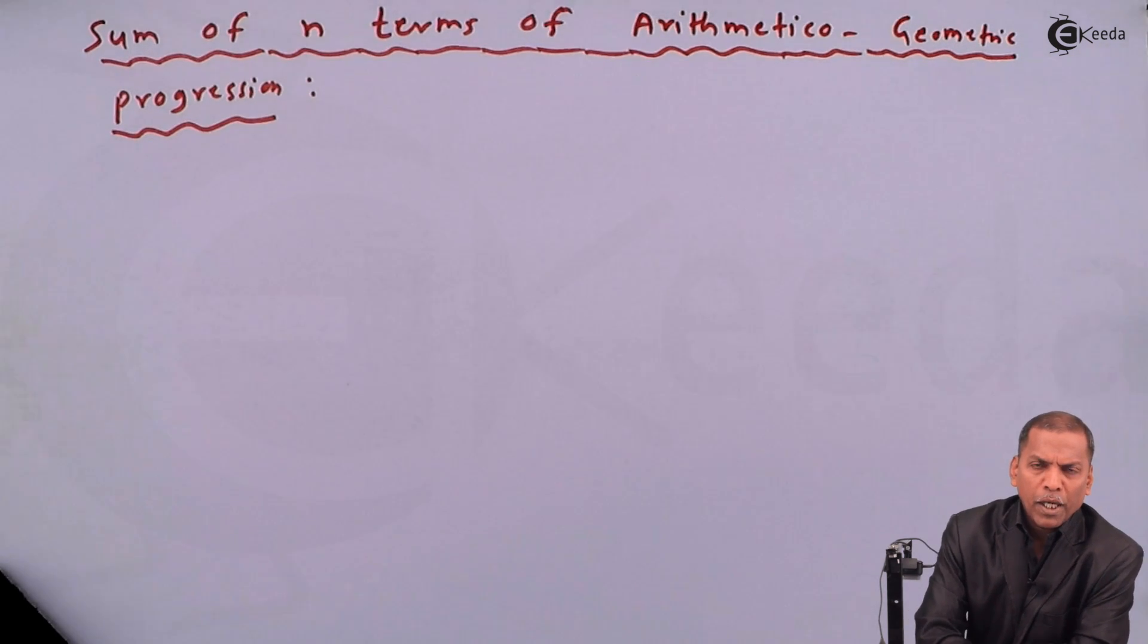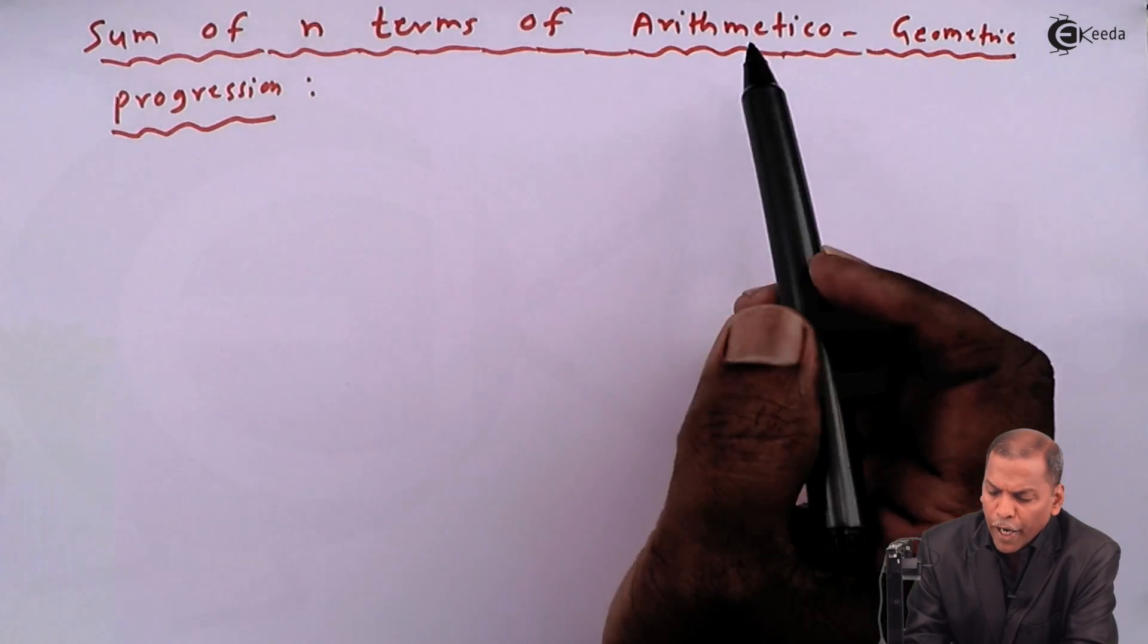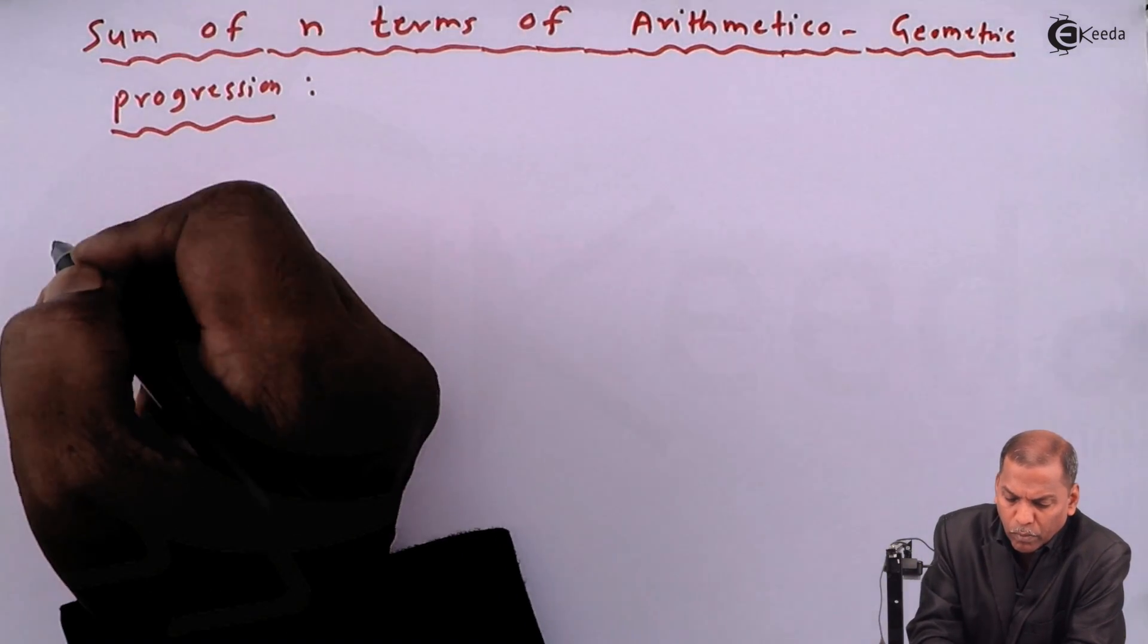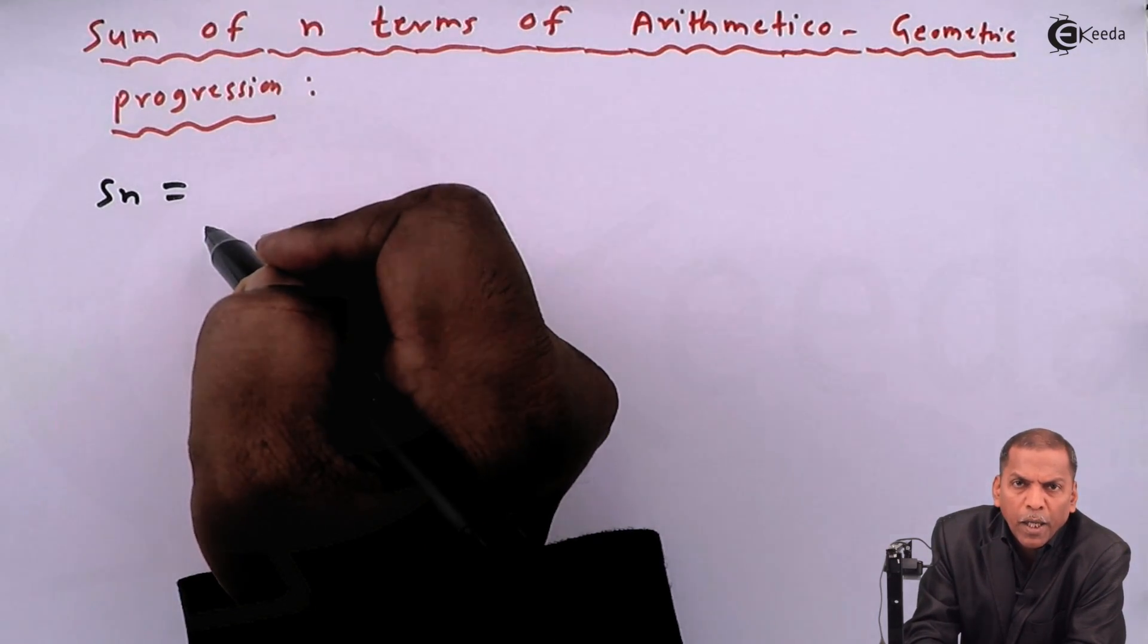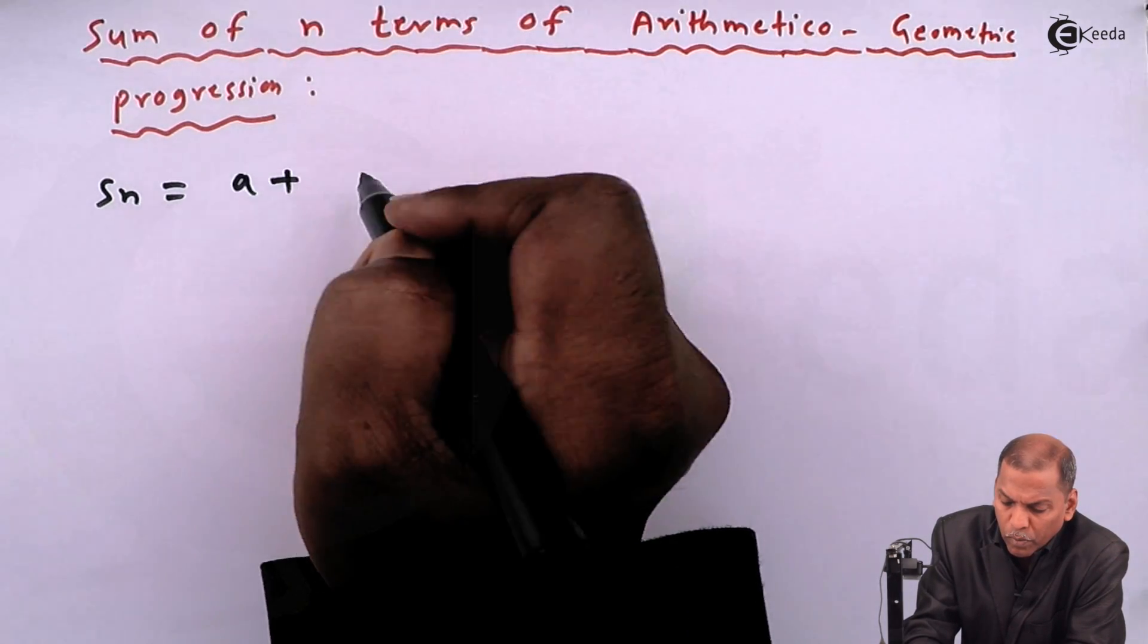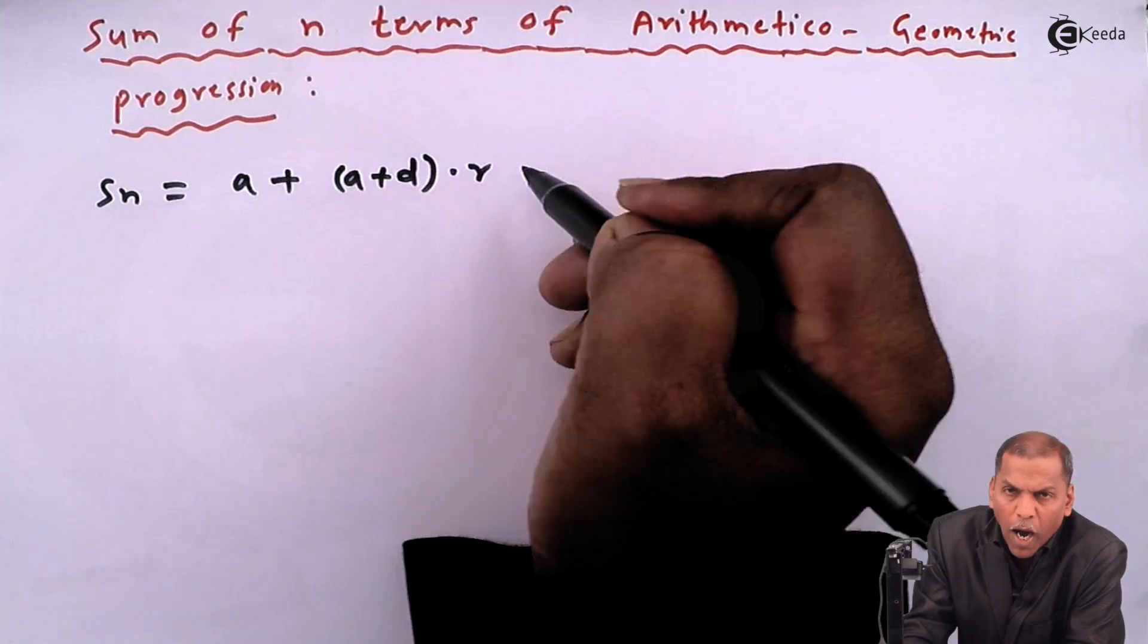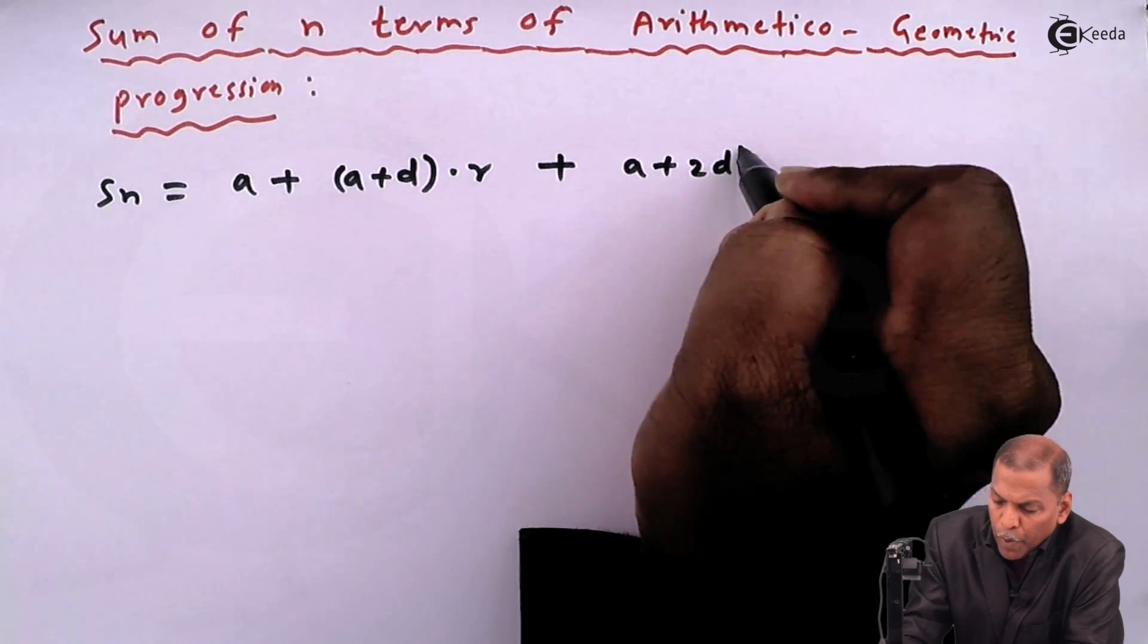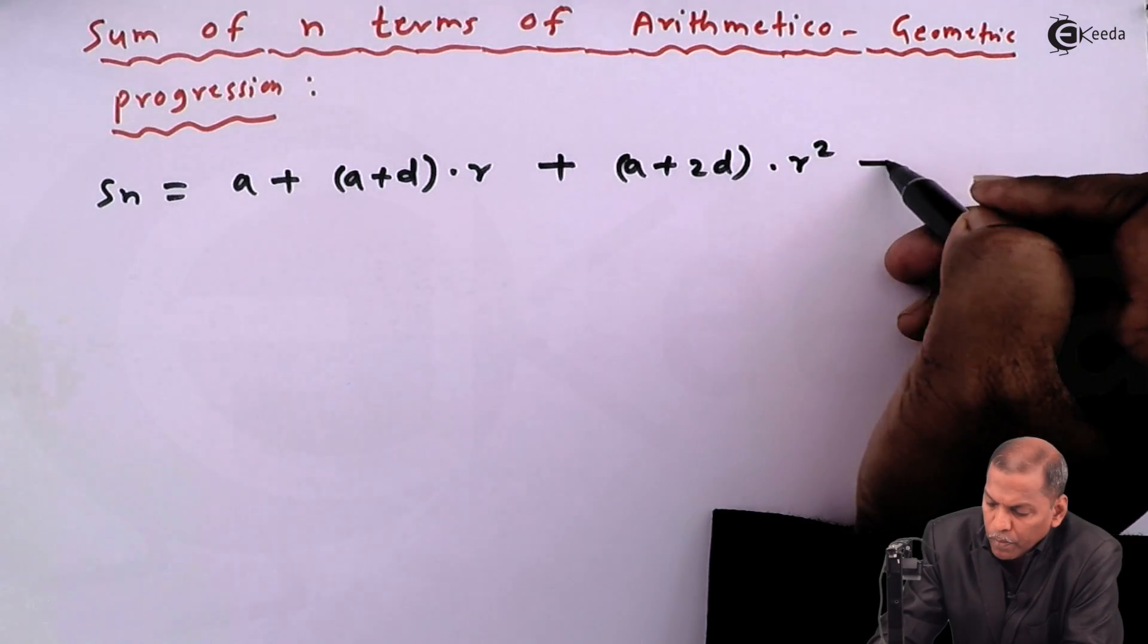Hello friends, now we see the sum of n terms of arithmetico-geometric progression. So Sn is equal to a plus (a+d)·r plus (a+2d)·r² plus